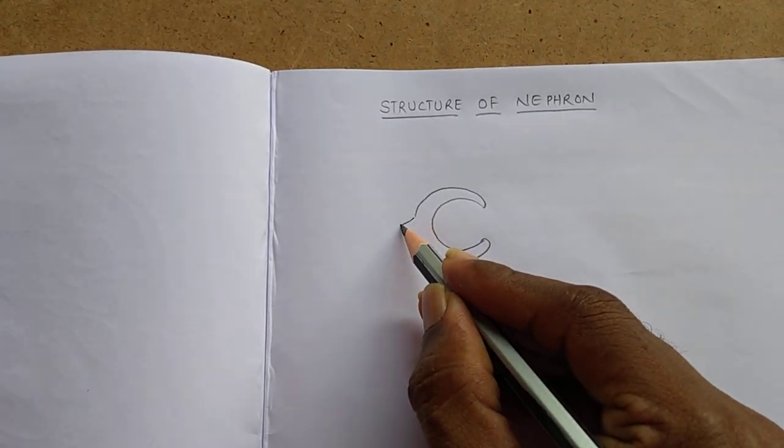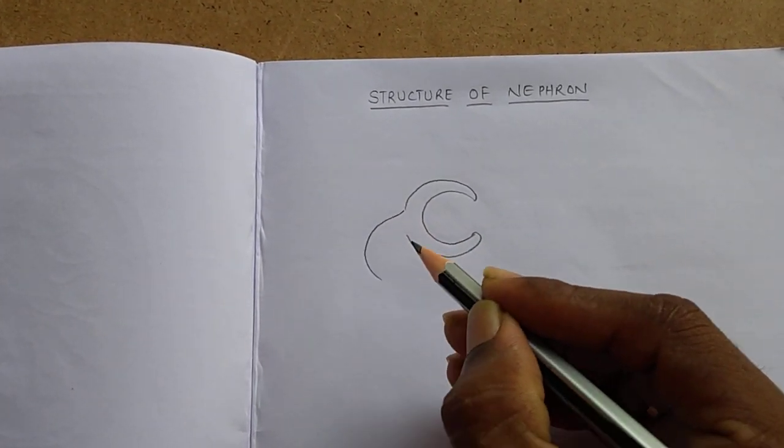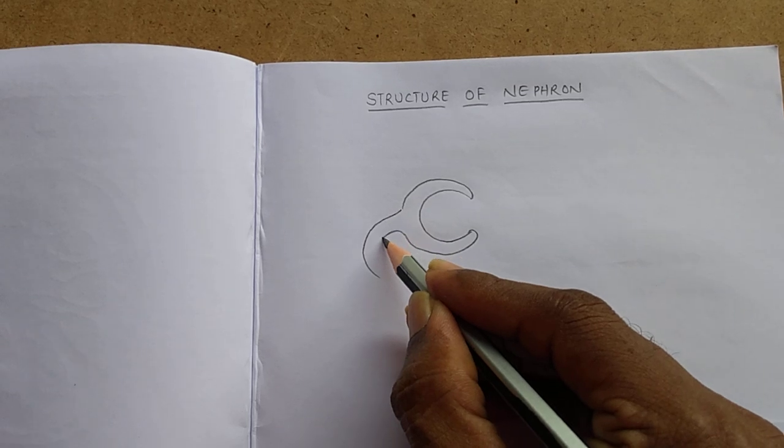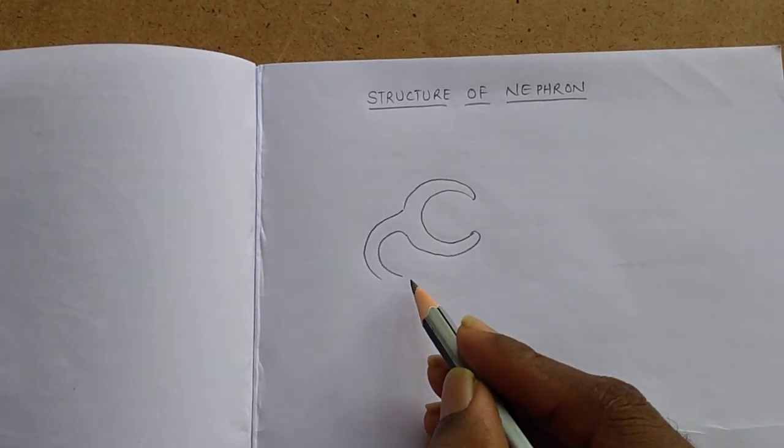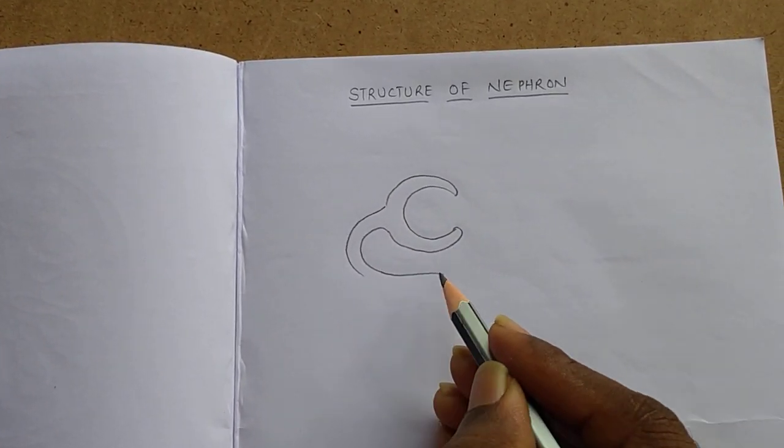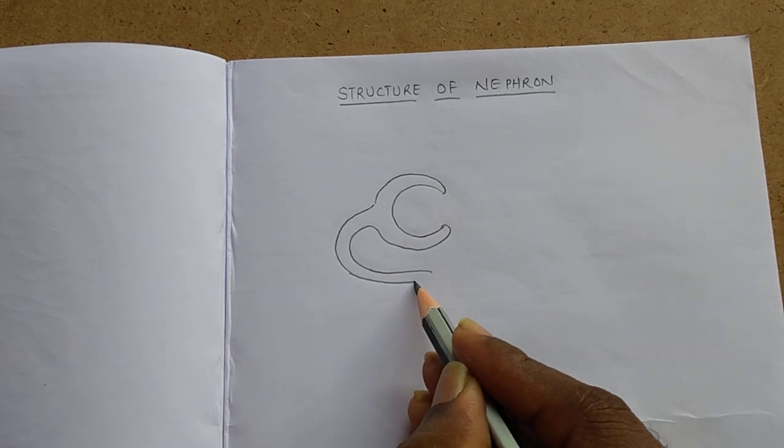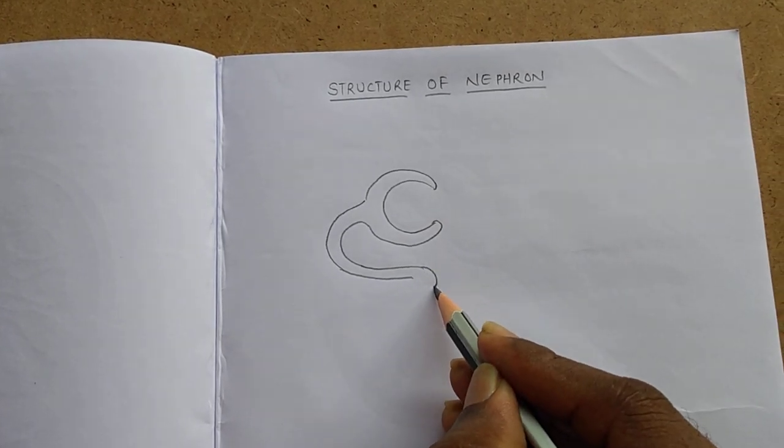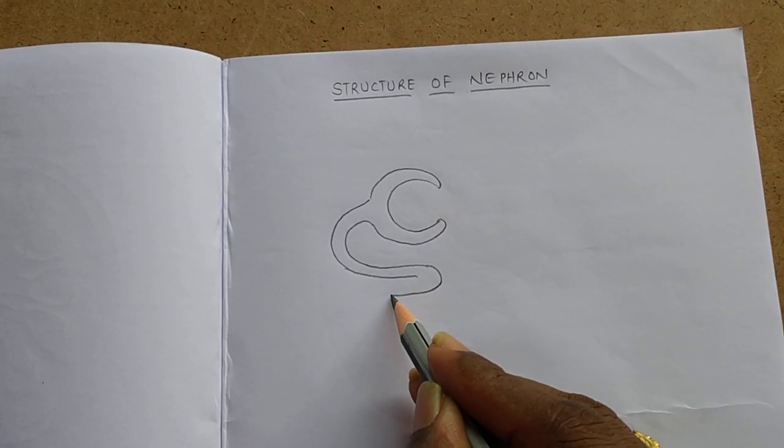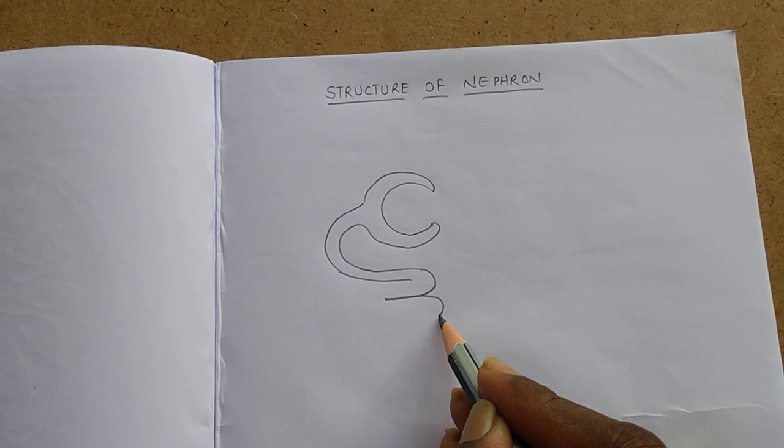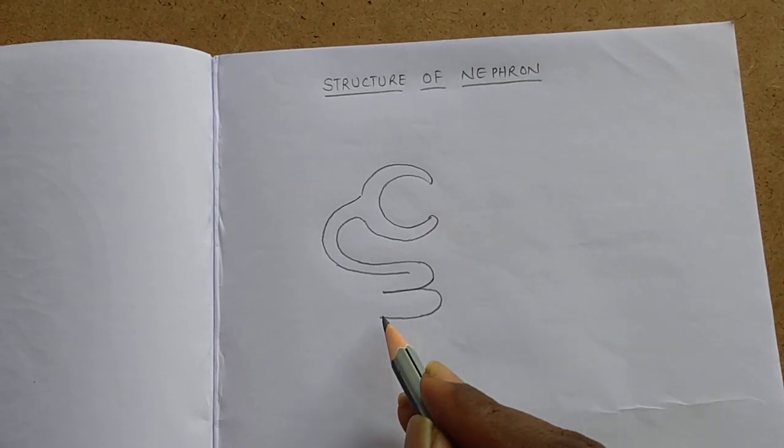From here, we have to draw the proximal convoluted tubule like this.